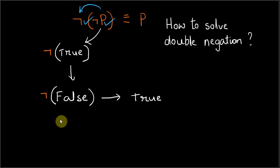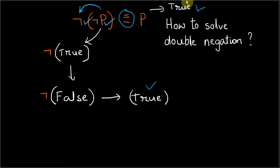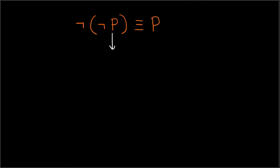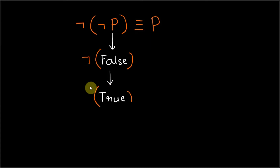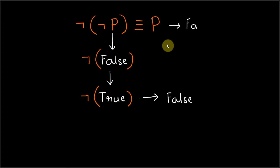Therefore, negation of true is false, and negation of false is true. Now we have true on both sides and the equivalence holds. If P is false, the same logic applies: first negation of false becomes true, and then negation of true becomes false. On both sides we have false, and the equivalence is true.